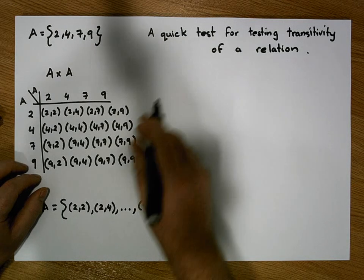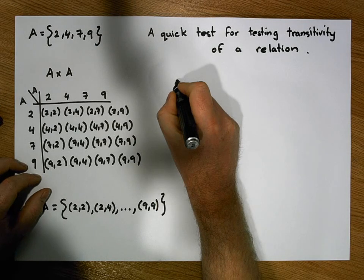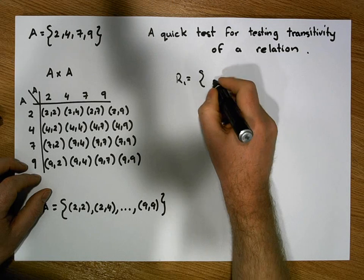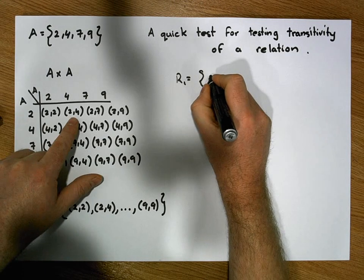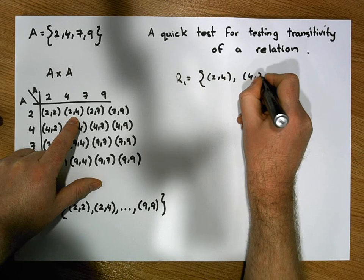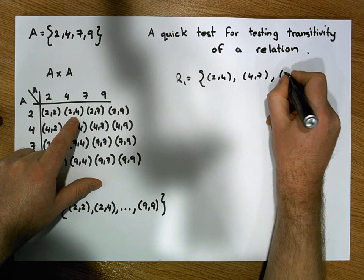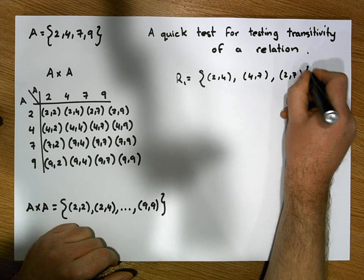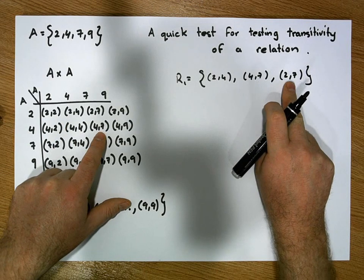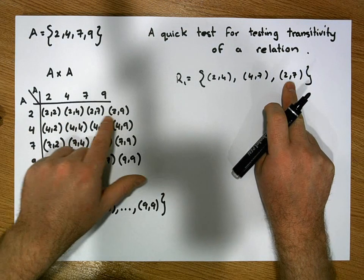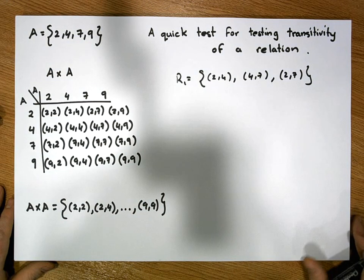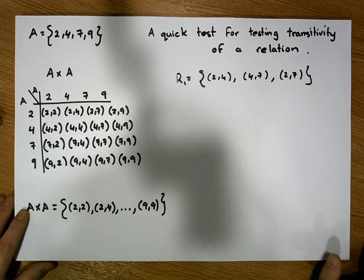So let's choose a relation that we know is transitive. I'm going to use a relation R1, which is equal to the set containing the ordered pairs (2,4), (4,7), and (2,7). So this relation contains (2,4), (4,7), and (2,7), and the question is: is this transitive?